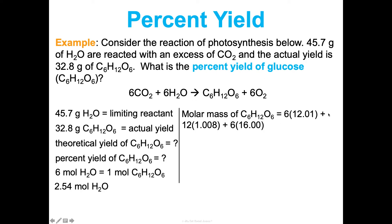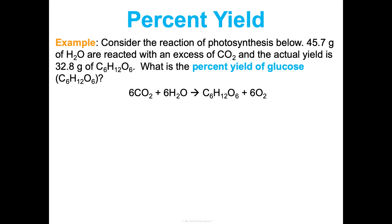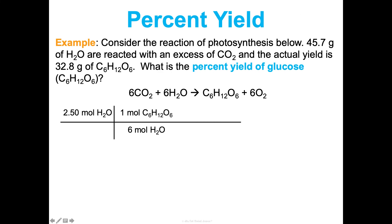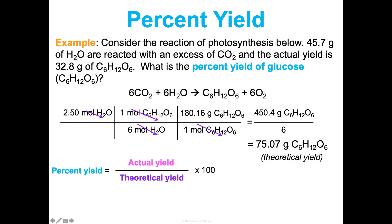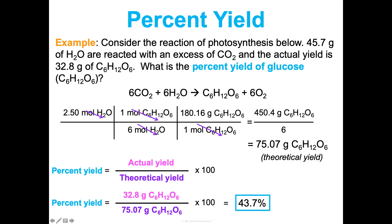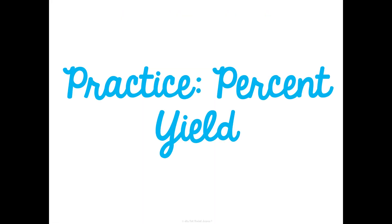The molar mass of glucose is 180.16 g/mol. Using 2.54 moles of water with the ratio of 6 moles H₂O per 1 mole glucose, and multiplying by 180.16 g/mol, we get our theoretical yield of glucose. Then percent yield equals actual over theoretical times 100 — 32.8 grams actual divided by the theoretical yield times 100 gives 43.7%. So we made 43.7% of what we theoretically could have made. Now you try the practice problem, and that's everything you need to know from what is arguably our scariest unit — but you can totally do this!